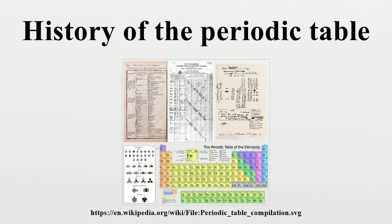The elements which are the most widely diffused have small atomic weights. The magnitude of the atomic weight determines the character of the element, just as the magnitude of the molecule determines the character of a compound body. We must expect the discovery of many yet unknown elements, for example, elements analogous to aluminum and silicon, whose atomic weight would be between 65 and 75.